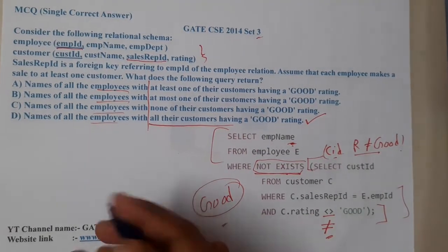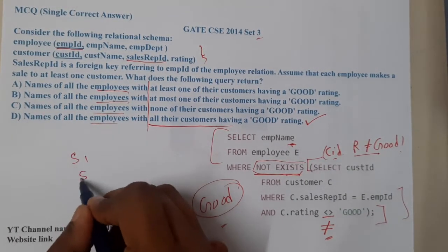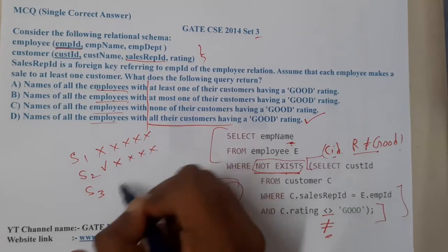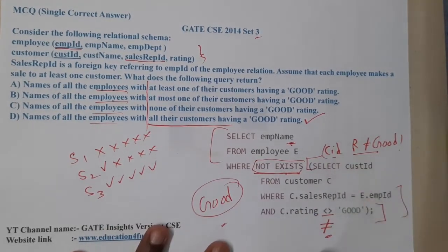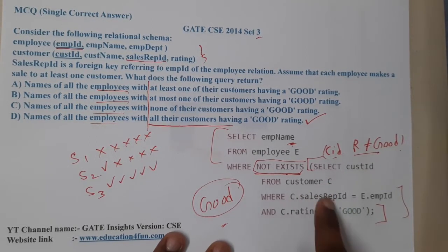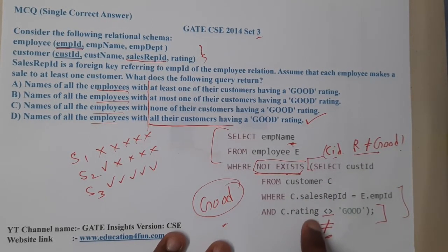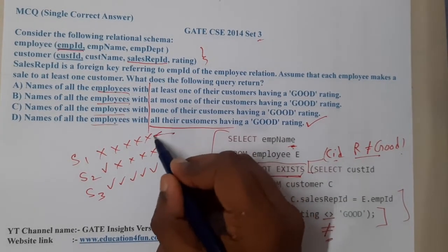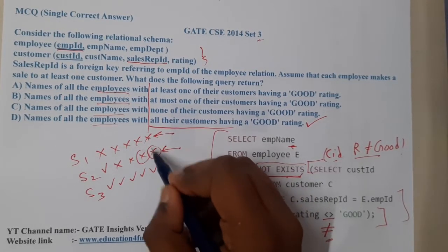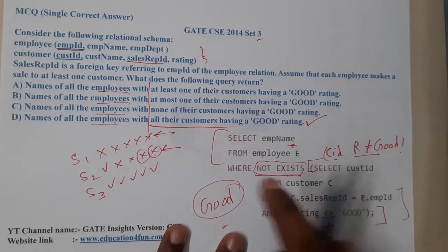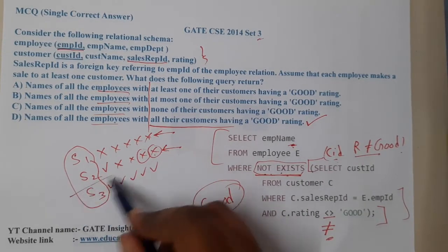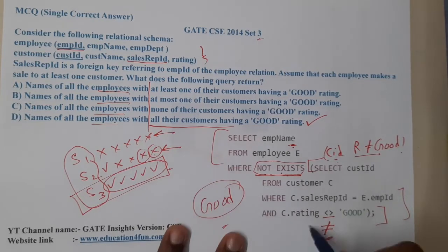Let us take an example. Salesman 1 got all bad reviews. Salesman 2 got only one good review and the rest are bad. Salesman 3 got all good reviews. Going customer by customer, we check whether the rating is not equal to good. Salesman 1 has at least one not-equal-to-good; Salesman 2 also has at least one not-equal-to-good. So S1 and S2 appear in the subquery. In a company with only three salespersons, the one NOT existing in that subquery is S3 — who has all good ratings.